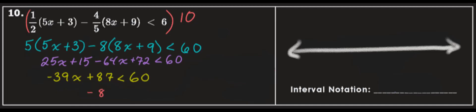Subtract 87 from both sides. Negative 39x is less than negative 27.